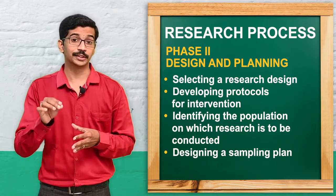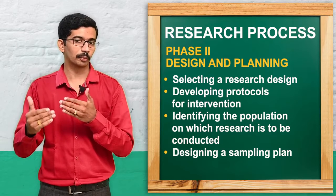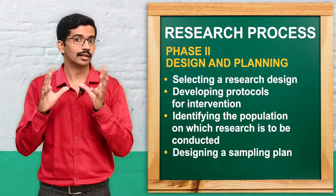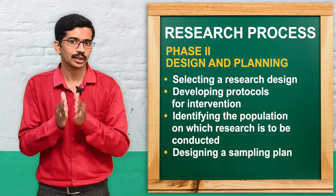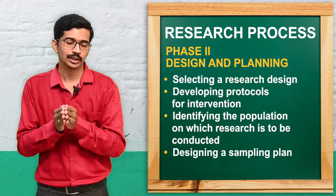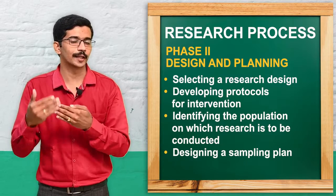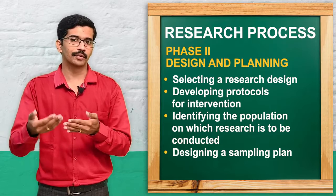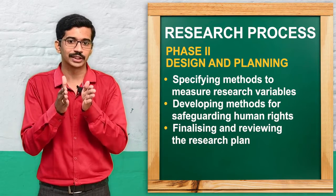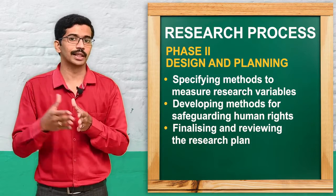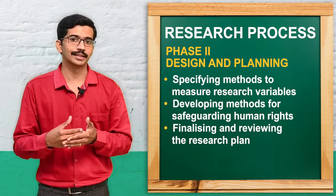Next is specifying methods to measure the research. From the population, we go for a subset called a sample — since we cannot include all nurses in a country or state, we select a subset using sampling techniques such as probability sampling or non-probability sampling. Then we choose the method of data collection, such as interviews, questionnaires, or rating scales.